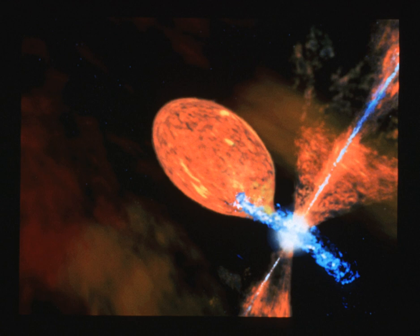The cool giant star loses material via Roche lobe overflow or through its stellar wind, which flows onto the hot compact star, usually via an accretion disk.